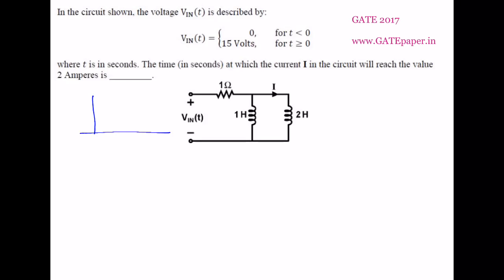The input voltage can be written as: for T less than 0, input voltage is 0, and for T greater than 0 it is 50. This is Vin — it looks like a DC voltage being applied to this circuit.